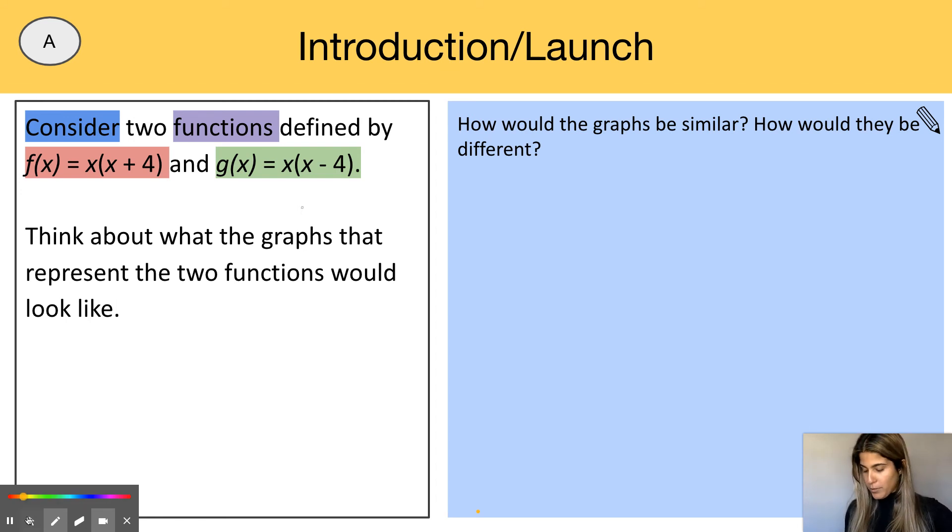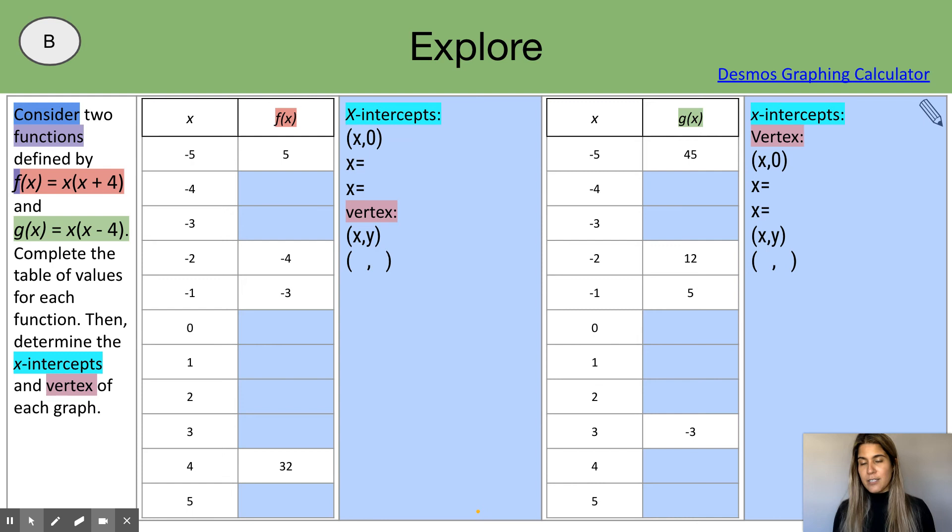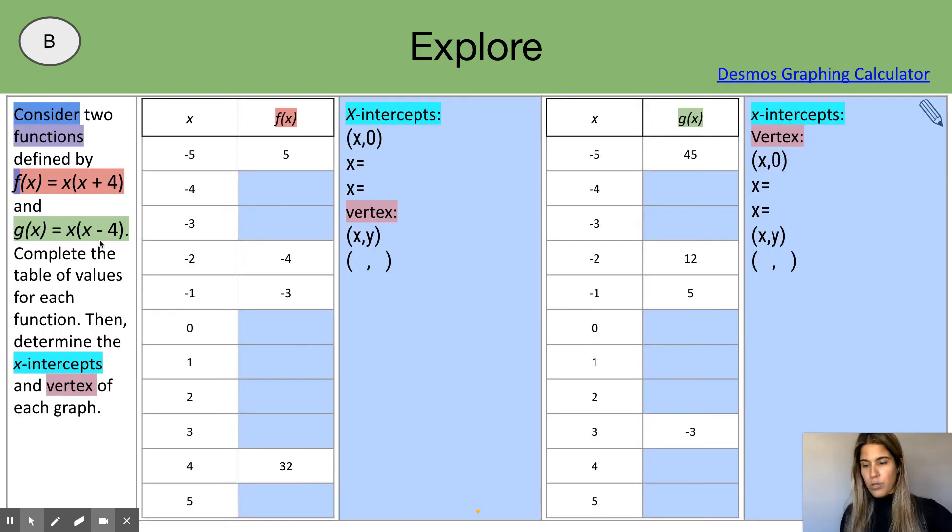After this, we are going to move on to our explore portion. For our explore portion, it says, consider two functions, same as our launch. F of x equals x times x plus 4 and g of x equals x times x minus 4. So we are seeing key differences between these. I have this one right here, the table for the first graph, and I have the table for the second graph right here.